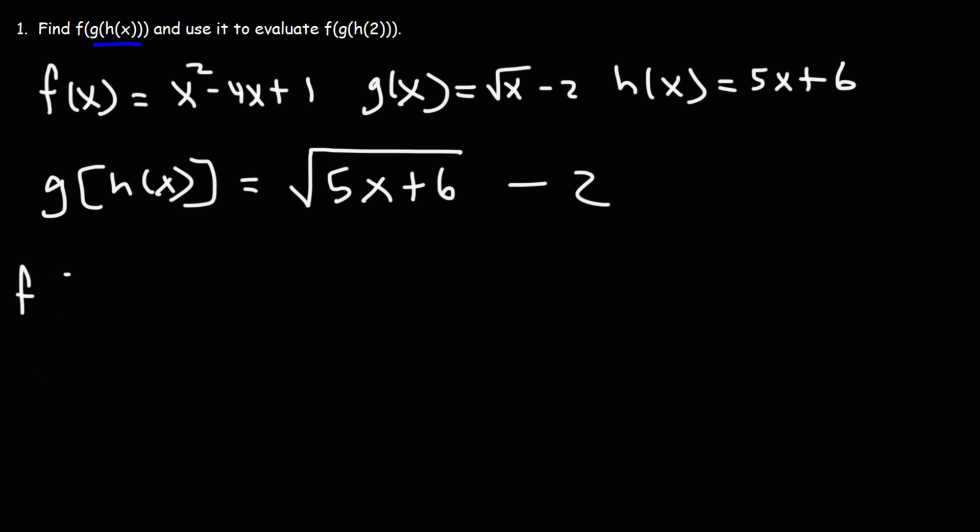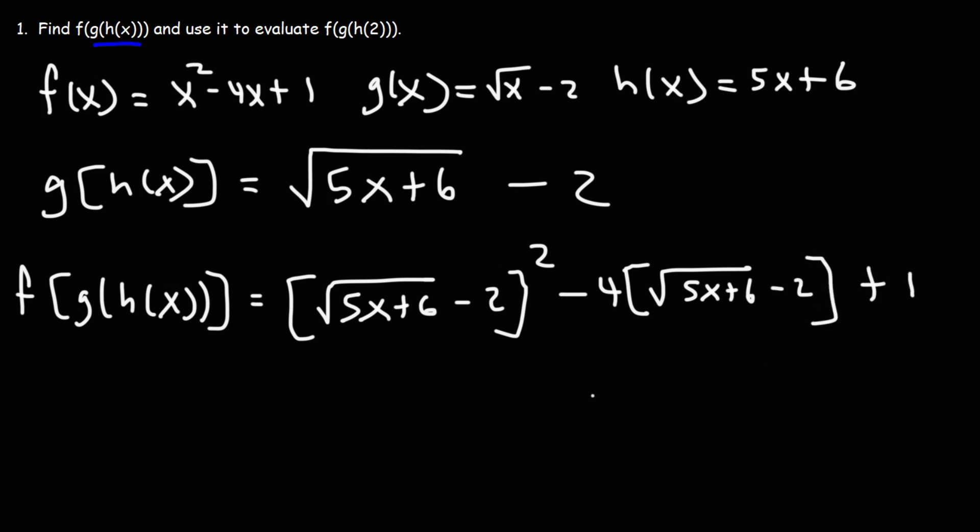Now, to find f of g of h of x, we need to take this and plug it into f everywhere we see an x. So we have the square root of 5x plus 6 minus 2 squared minus 4 times that and then plus 1. So that's f of g of h of x.